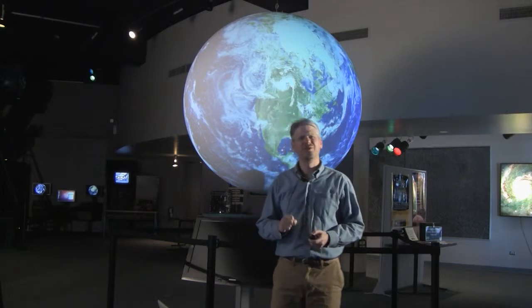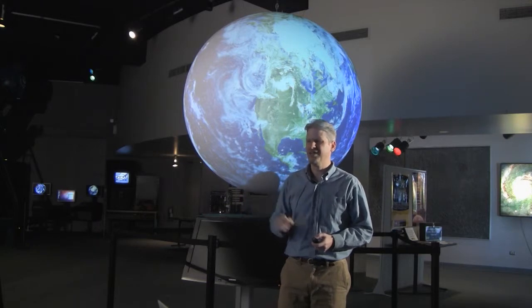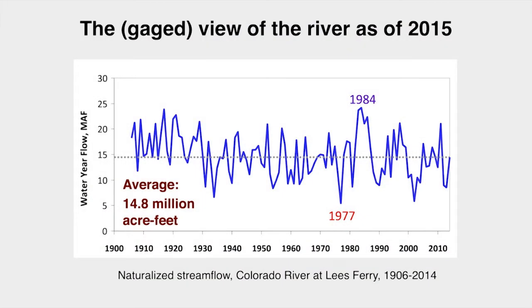Over the next 30 years, while the long-term average still hovered around 15 million acre feet, the climate system produced variability in the river that hadn't been seen before. There were large decadal swings from wet to dry, and embedded within those swings were a new record wet year of 25 million acre feet in 1984, and a new record drought year of 6 million acre feet in 1977.